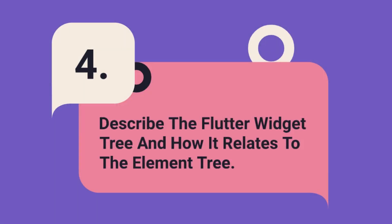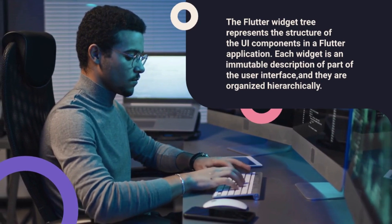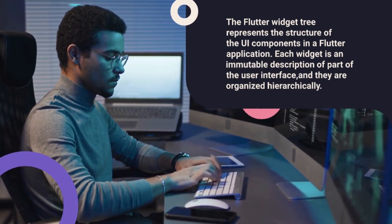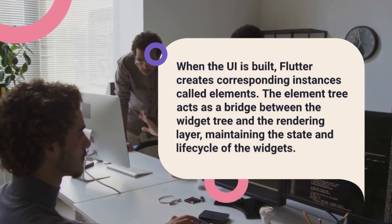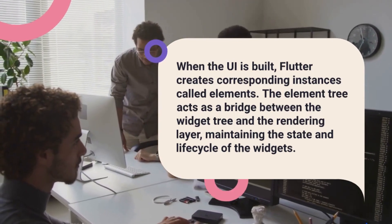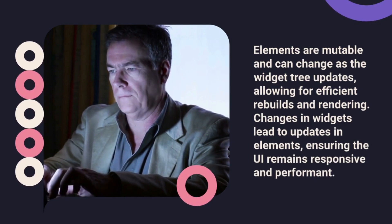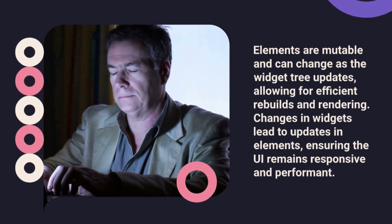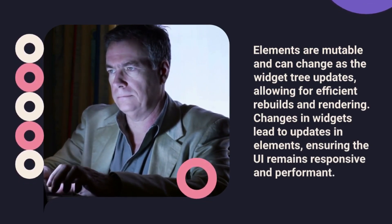Question 4: Describe the Flutter widget tree and how it relates to the element tree. The Flutter widget tree represents the structure of the UI components in a Flutter application. Each widget is an immutable description of part of the user interface, and they are organized hierarchically. When the UI is built, Flutter creates corresponding instances called elements. The element tree acts as a bridge between the widget tree and the rendering layer, maintaining the state and lifecycle of the widgets. Elements are mutable and can change as the widget tree updates, allowing for efficient rebuilds and rendering. Changes in widgets lead to updates in elements, ensuring the UI remains responsive and performant.